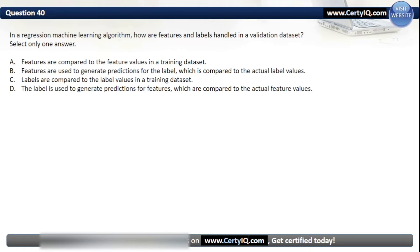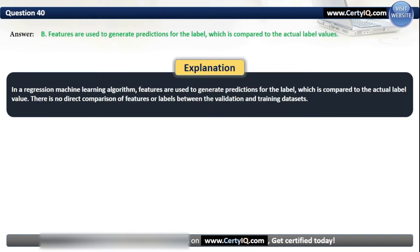Question 40. In a regression machine learning algorithm, how are features and labels handled in a validation dataset? Options: A. Features are compared to the feature values in a training dataset, B. Features are used to generate predictions for the label which is compared to the actual label values, C. Labels are compared to the label values in a training dataset, or D. The label is used to generate predictions for features which are compared to the actual feature values. The correct option is B — features are used to generate predictions for the label, which is compared to the actual label values. There is no direct comparison of features or labels between the validation and training datasets.